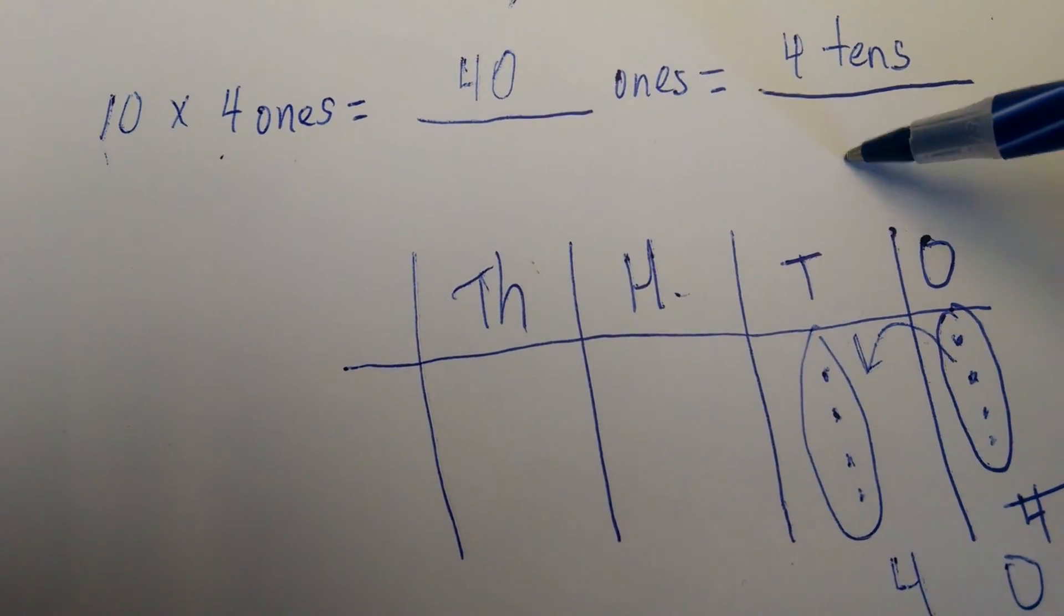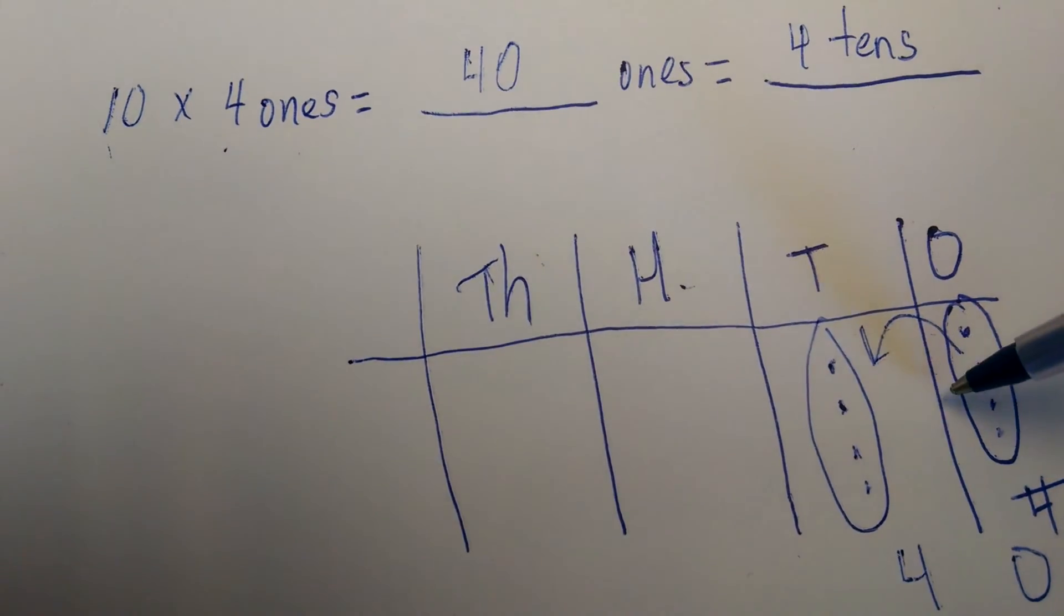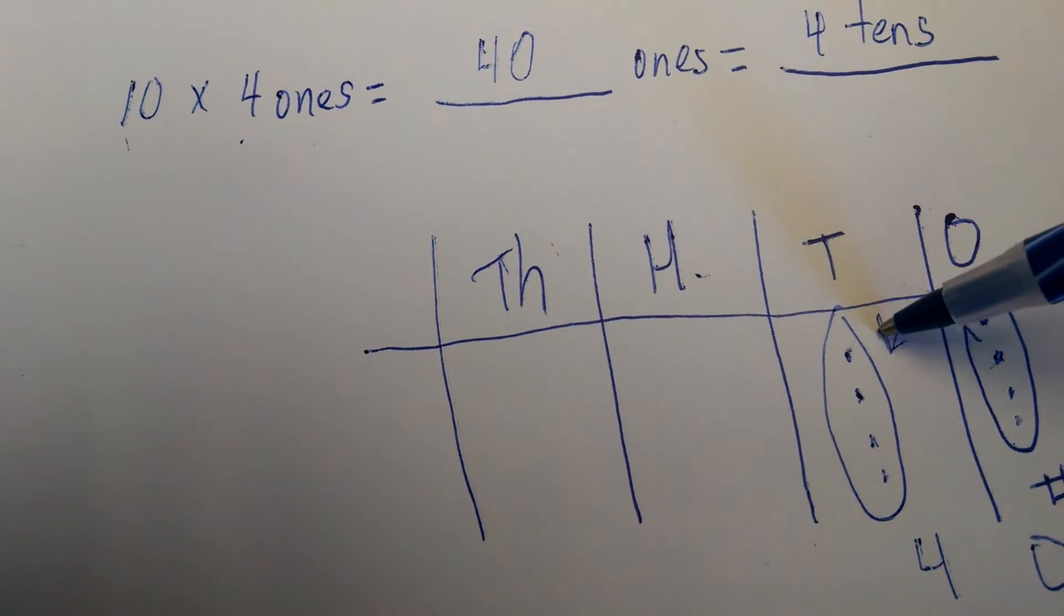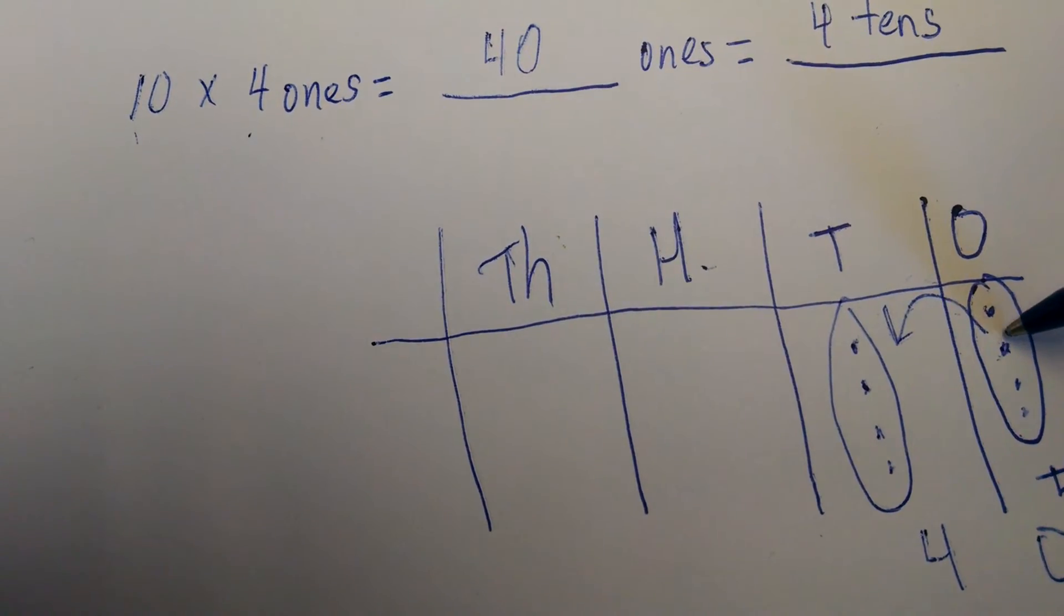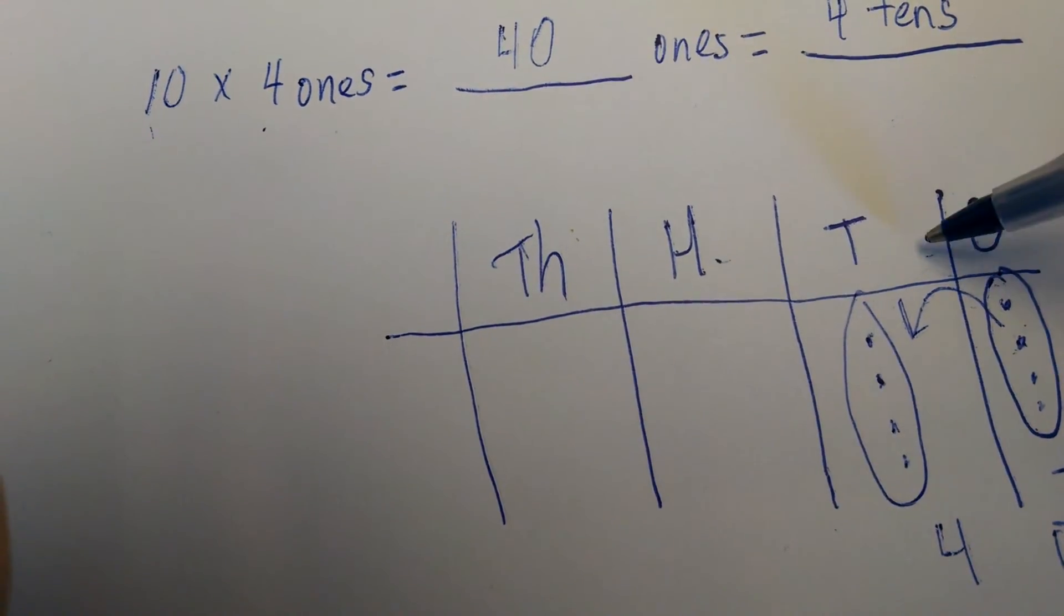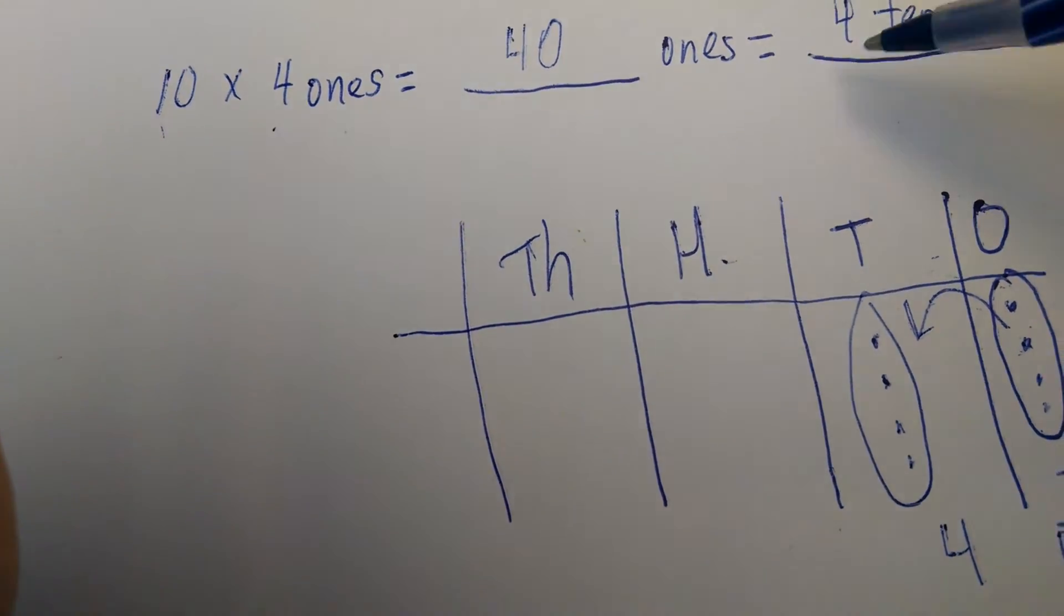So when the students are working in a place value chart, this arrow shows that you multiply this unit by 10. The number of units: 4 ones times 10 is 40 ones, or 4 tens.